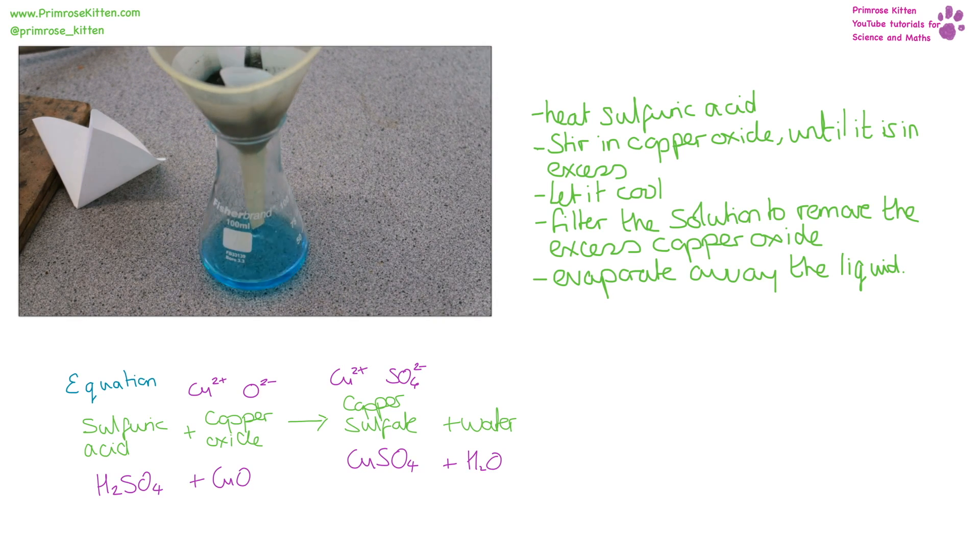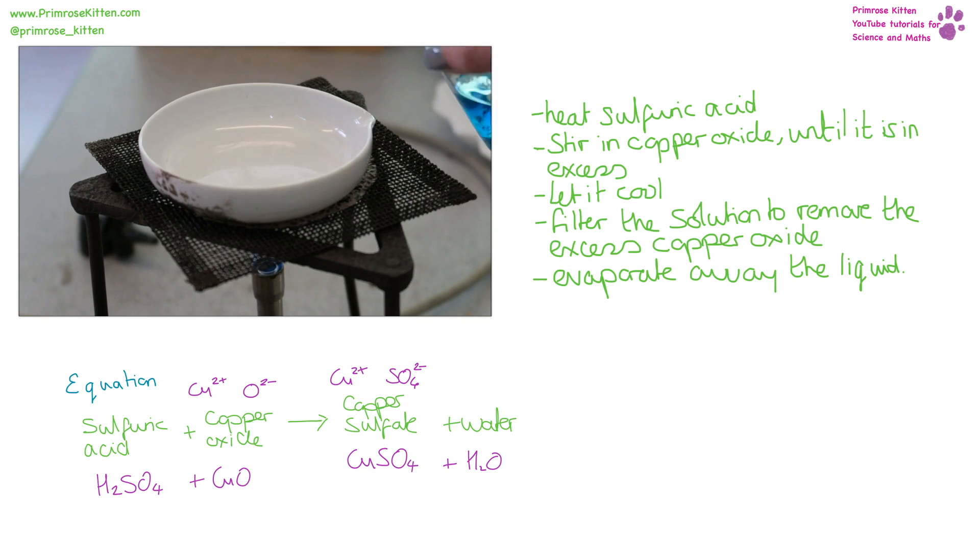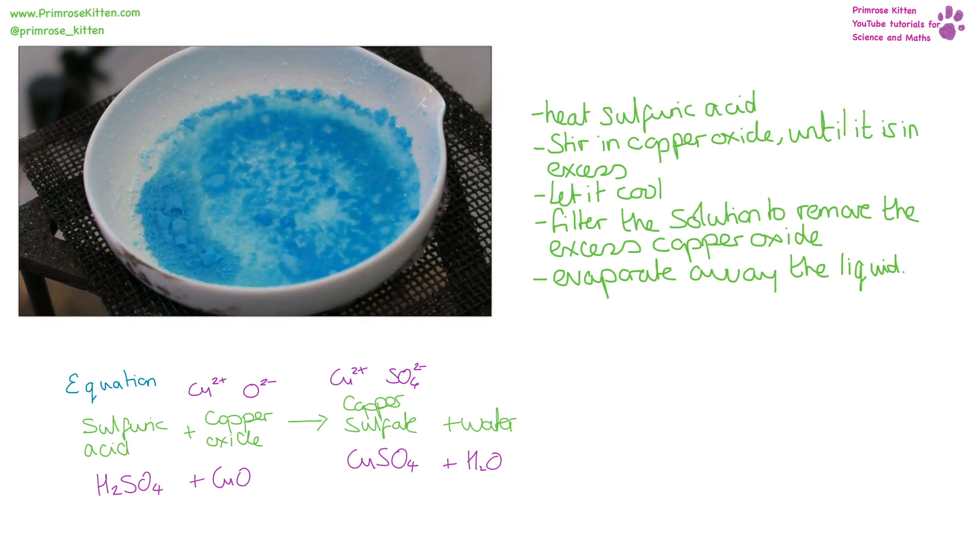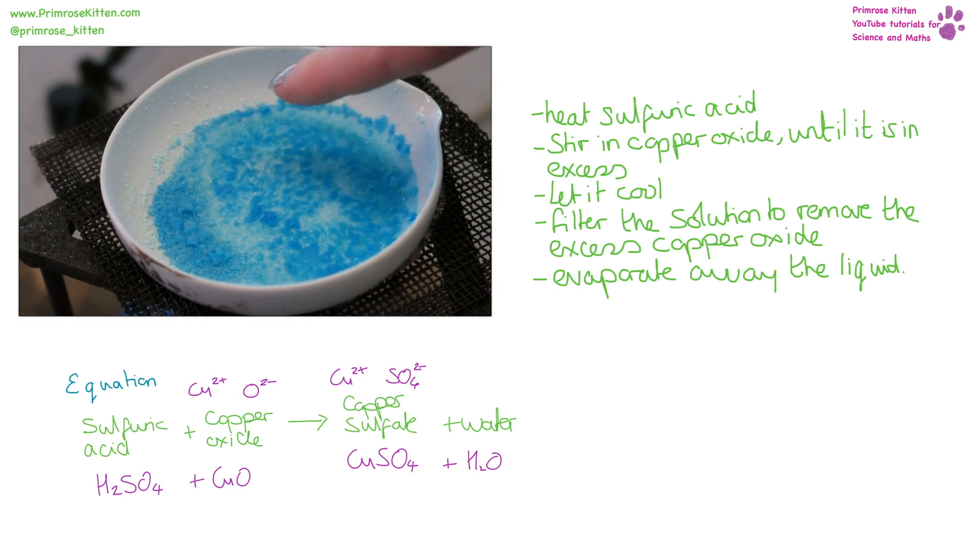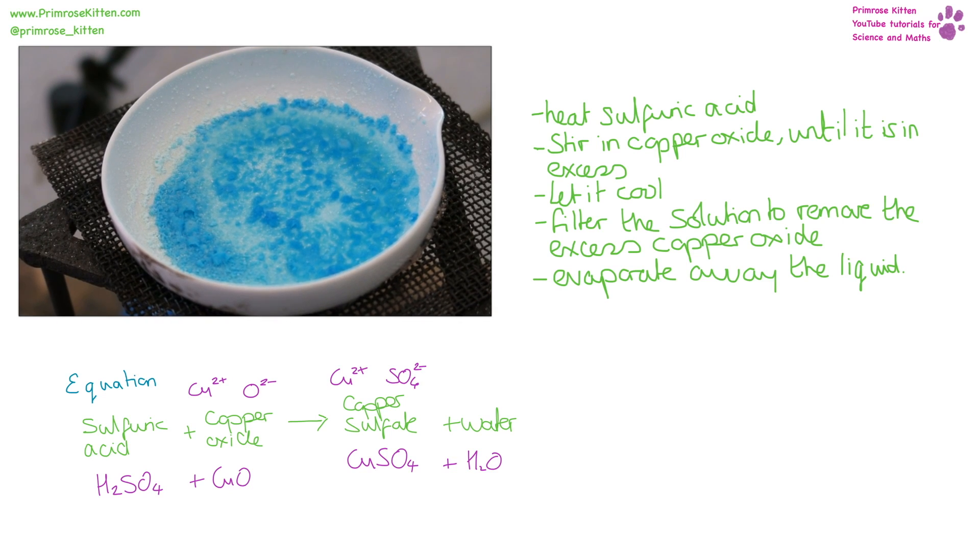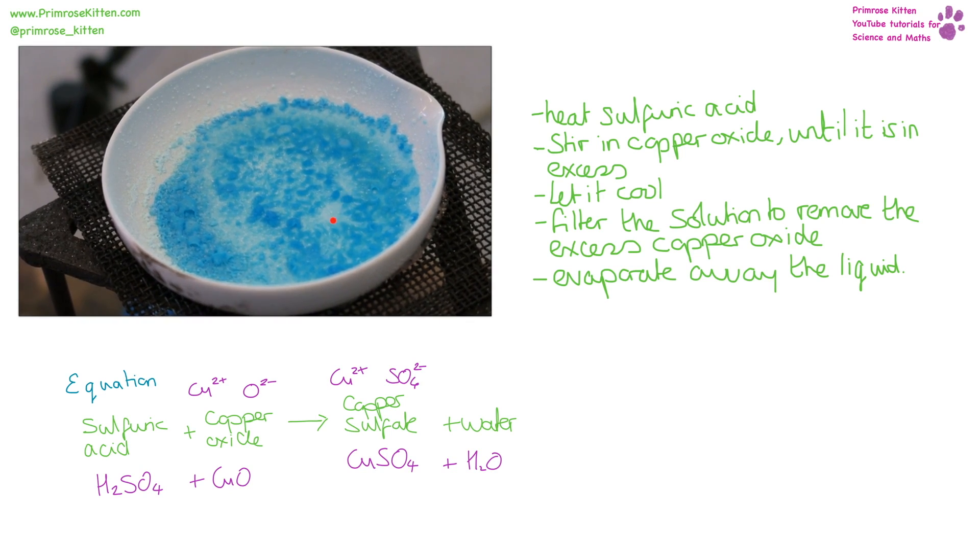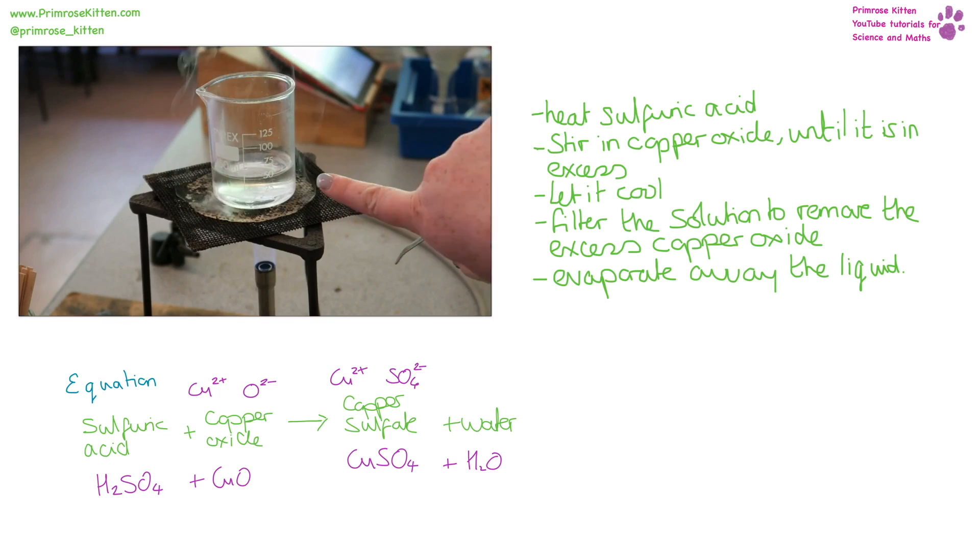Once you have your solution of copper sulfate, you can evaporate away the water to leave you with the copper sulfate crystals. Now, the size of the crystals will depend on how quickly you do this. You're going to be left with blue crystals. The blue crystals here are the hydrated ones, and the white crystals around the edge are the anhydrous ones.